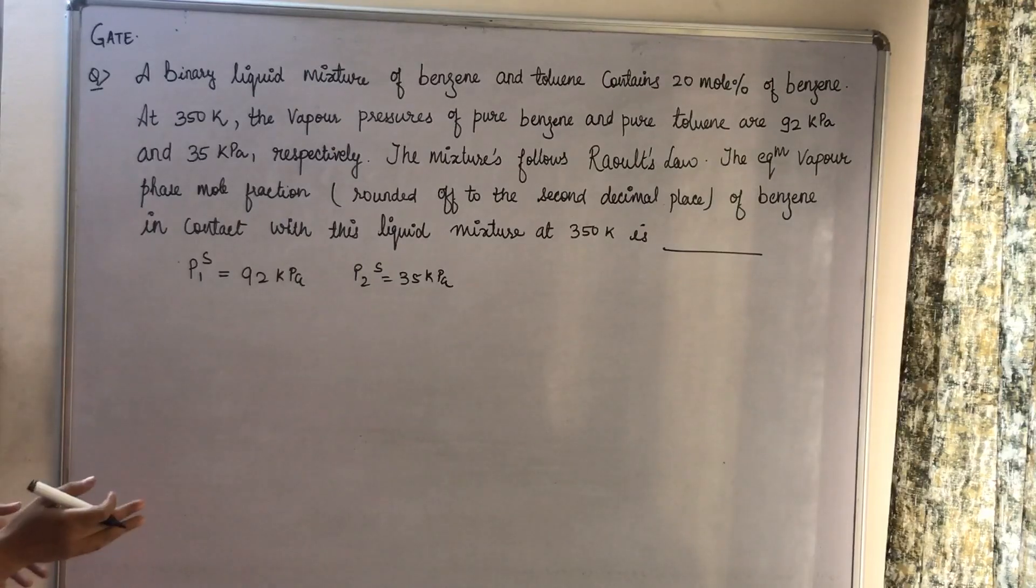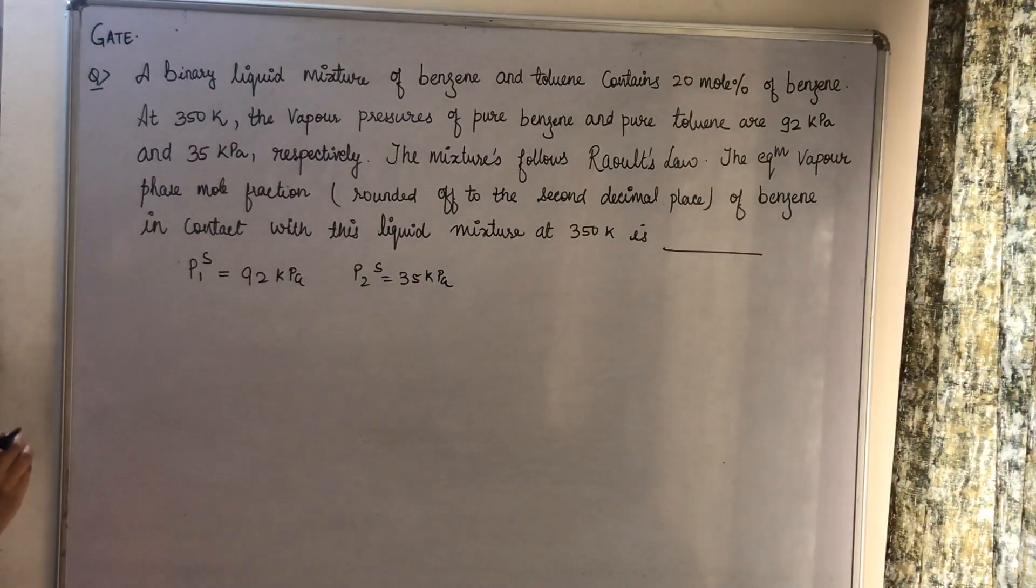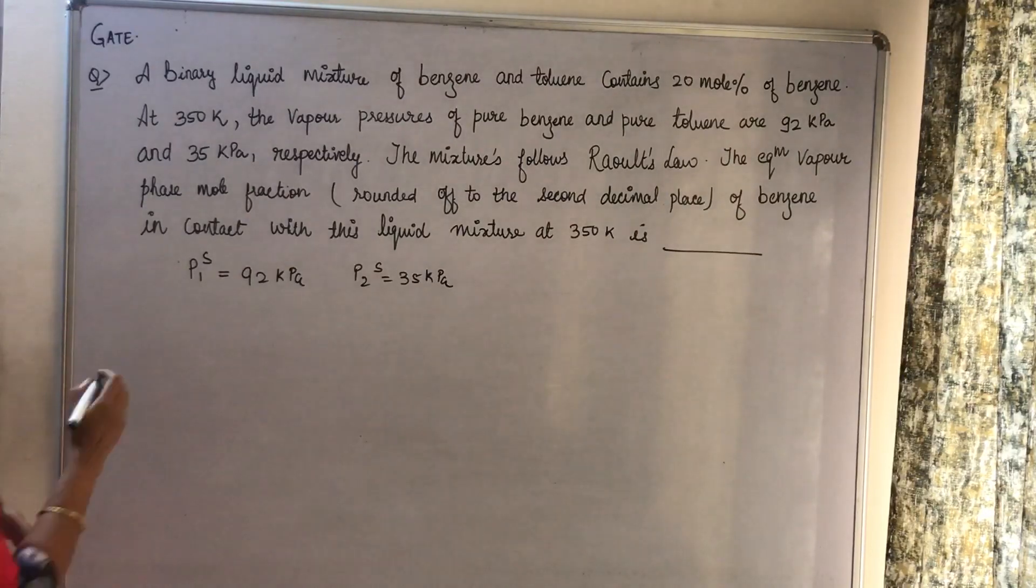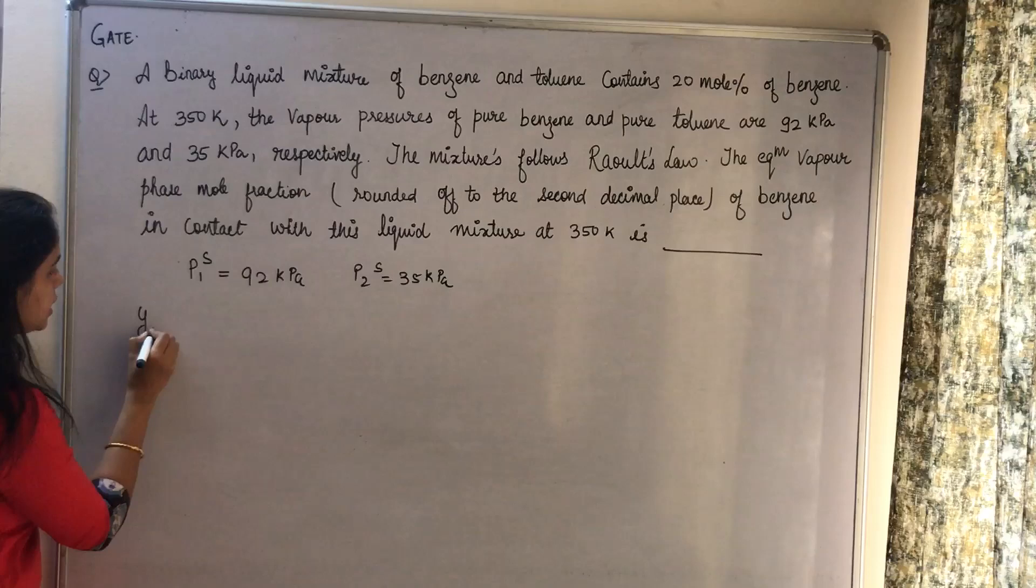The mixture follows Raoult's law. The equilibrium vapor phase mole fraction (round off to the second decimal place) of benzene in contact with the liquid mixture at 350 Kelvin is what we need to find out - let's call it y1.